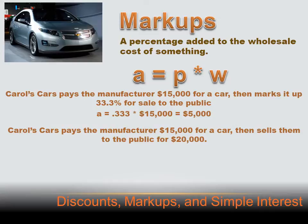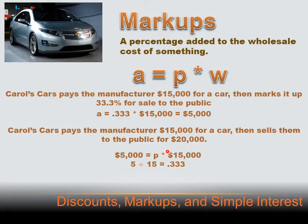Let's do this problem backwards. Carroll's Cars pays the manufacturer $15,000 for a car and sells them to the public for $20,000. What's her markup? Using the percent equation, $5,000 — which is the amount of the markup (the public price minus her cost) — equals the percentage times $15,000. Dividing both sides by $15,000 and canceling zeros, we get 5 divided by 15 equals P, and that equals 0.333, or 33.3%.